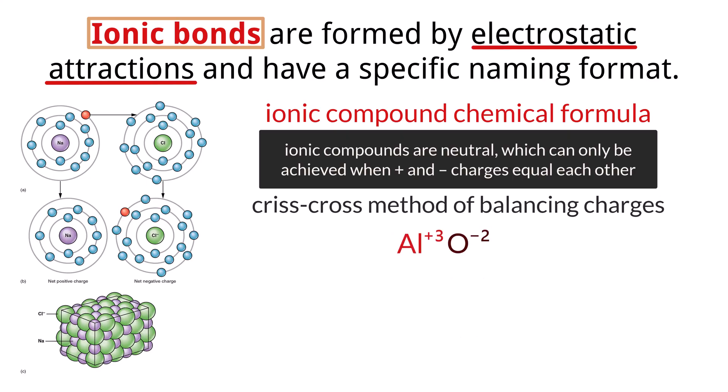This charge balancing becomes particularly important when dealing with ions that have different magnitudes of charge. For example, aluminum ions and oxide ions. Crisscrossing the charges gives us Al2O3. This indicates that for every two aluminum ions with a total charge of plus 6, we need three oxide ions with a total charge of minus 6 to achieve electrical neutrality. Therefore, the formula for aluminum oxide is Al2O3. Always remember to simplify the subscripts to the lowest whole number ratio if possible.